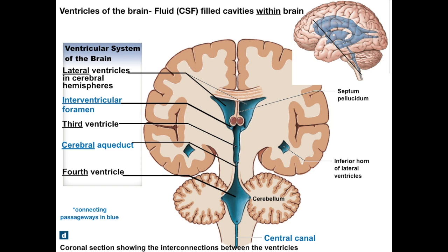There is a hard-to-see passageway connecting the lateral ventricles called the intraventricular foramen. Medial and just inferior to those lateral ventricles is the third ventricle, which is sandwiched between the structure called the thalamus. Branching off the third ventricle inferiorly is a canal called the cerebral aqueduct, which connects to the fourth ventricle. The fourth ventricle is between the cerebellum and the pons, and continuous with it is the central canal of the spinal cord.